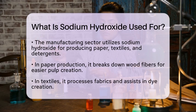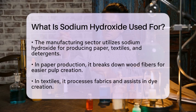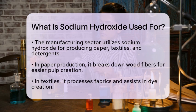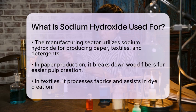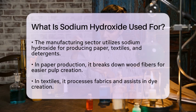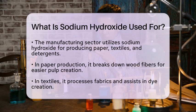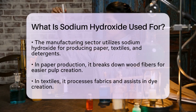The manufacturing sector also relies heavily on sodium hydroxide. It is essential in the production of paper, textiles, and detergents. In the paper industry, it helps to break down wood fibers, making it easier to produce pulp. In textiles, it is used to process fabrics and create dyes.